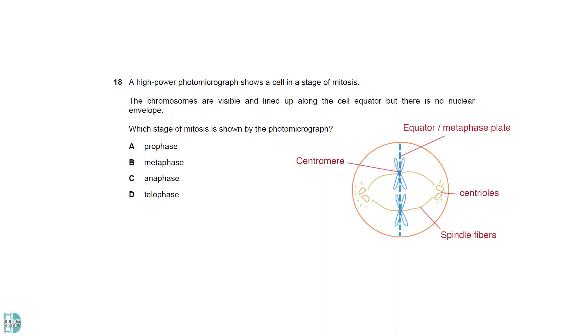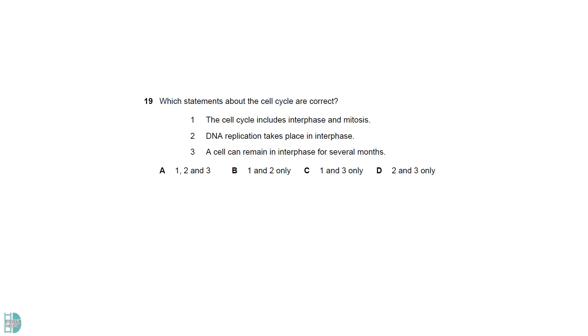Chromosomes line up at the equator of the spindle during metaphase. One is correct. The cell cycle includes interphase, nuclear division, and cytokinesis. Two is correct. DNA replication occurs during S phase, which is the second stage of interphase. Three is also true. A cell that is not dividing will stay in interphase.